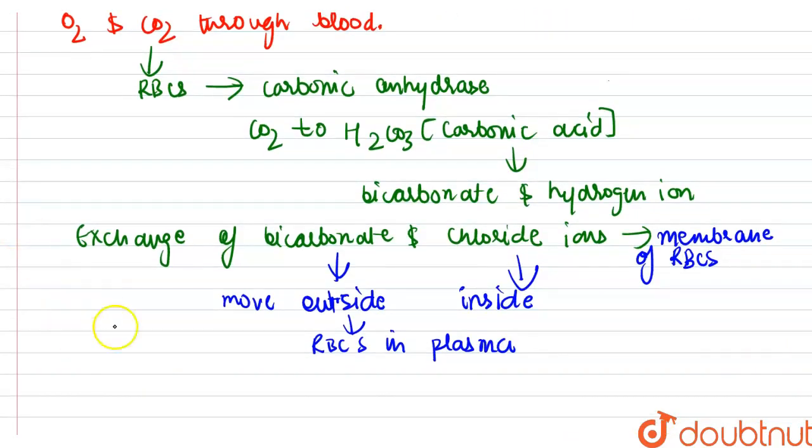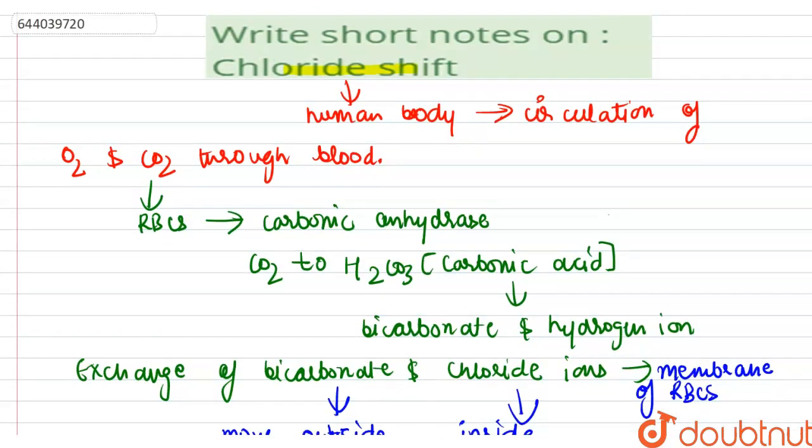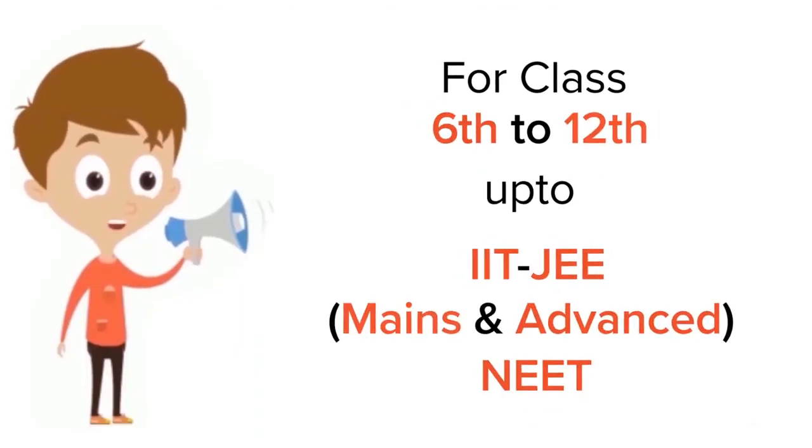This is the phenomenon which occurs to maintain the pH of the blood. Chloride shift is the process which occurs to maintain the pH of blood. So this was about chloride shift, thank you.